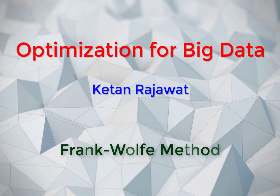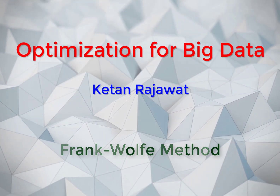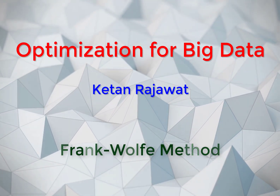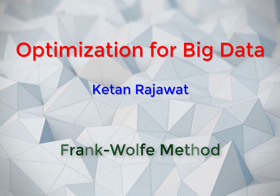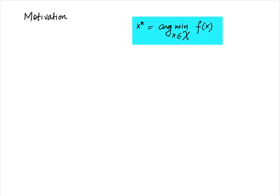In this video we will start looking at the conditional gradient method, which is of particular interest in problems where projection over the constraint set is not easy or efficiently done. We are still considering the constrained optimization problem from the last section: x* = argmin_{x in X} f(x), where calligraphic X is a closed and convex set.